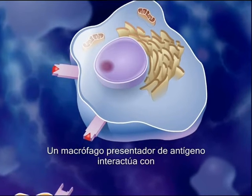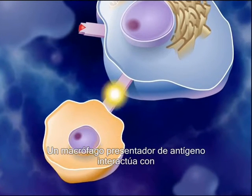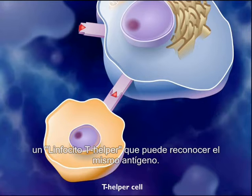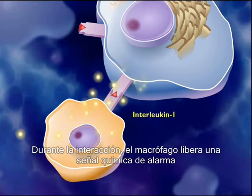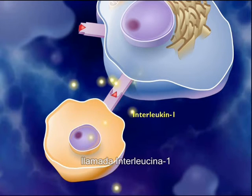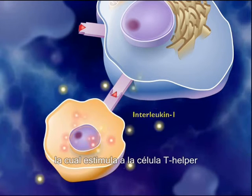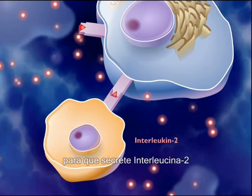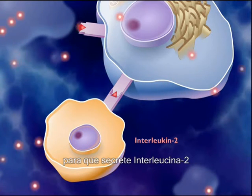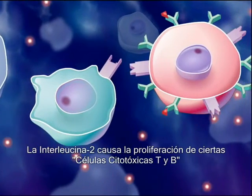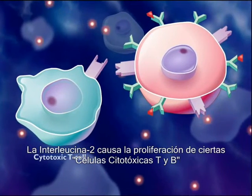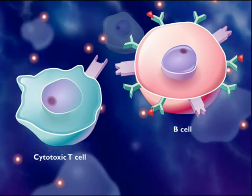An antigen-presenting macrophage interacts with a T-helper cell that can recognize the same antigen. During the interaction, the macrophage releases a chemical alarm signal called interleukin-1, which stimulates the T-helper cell to secrete interleukin-2. Interleukin-2 causes the proliferation of certain cytotoxic T-cells and B-cells.